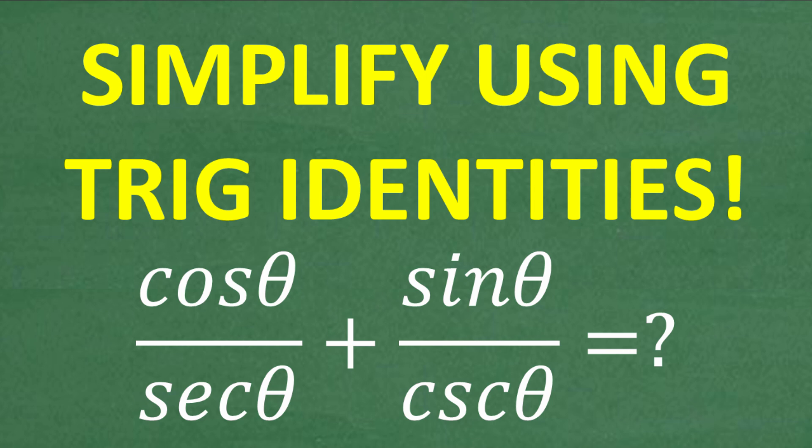The problem we have here is cosine theta over secant theta plus sine theta over cosecant theta. We want to simplify this expression using our knowledge of trigonometric identities and algebra.